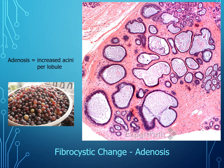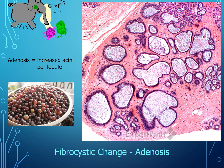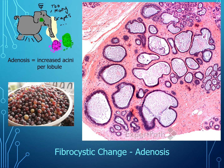Adenosis is another type of non-proliferative fibrocystic change. Using the grape analogy: if the grapes are the acini and the stem is the duct, adenosis is simply too many grapes — too many acini per lobule. We're maintaining our terminal ductal lobular unit, but there are just way too many acini. Adenosis in itself is benign and does not give any increased risk of malignancy.